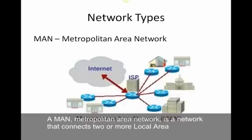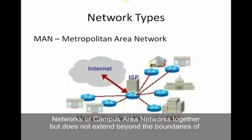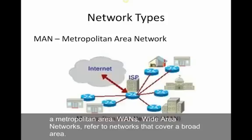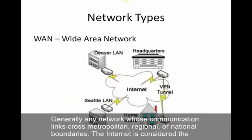In a MAN — a metropolitan area network — it's quite common that it connects two or more local area networks or campus area networks together, and it doesn't generally extend beyond the boundaries of a metropolitan area. WANs, wide area networks, refer to networks that cover a broad area — generally any network whose communication crosses smaller boundaries. As mentioned before, the internet is the largest wide area network.